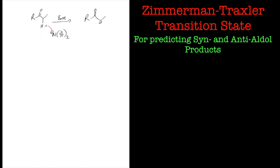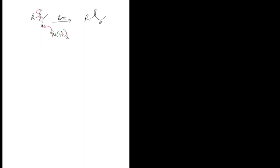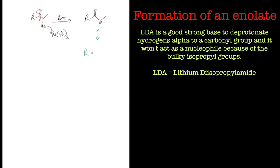So if we look at deprotonating alpha to the carbonyl group using a strong base such as LDA, lithium diisopropylamide, we have the opportunity to create two types of enolate.